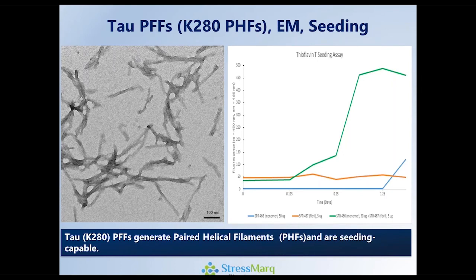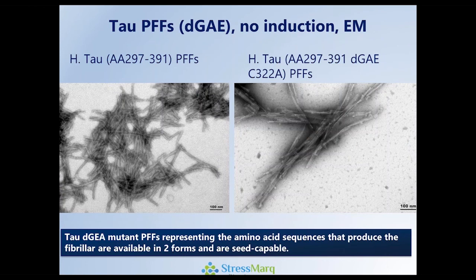One of the hallmarks of what we see in human disease, particularly in Alzheimer's that tau is associated with, are paired helical filaments. K2-AT mutants are known in the literature to spontaneously generate paired helical filaments, and you can see that on the left-hand side — in some cases you can see paired elements in these structures. We can also show on the right-hand side that these structures are capable of seeding themselves, so they are active. If we look just at the approximately 100 amino acids directly involved in creating the core of tau fibrils, we have two constructs referred to as the DGAE constructs, which both form fibrils and are seeding capable.